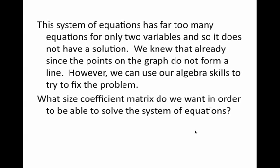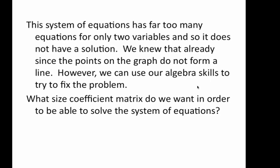We call a system with more equations than variables, a linear system that has more equations in it than it has variables, an over-determined system and that's what we've got here. We've got far too many equations and only two variables and so it doesn't even have a solution. We knew that already since the points on the graph do not form a perfect line. You can't get a straight line to go through all of those points.